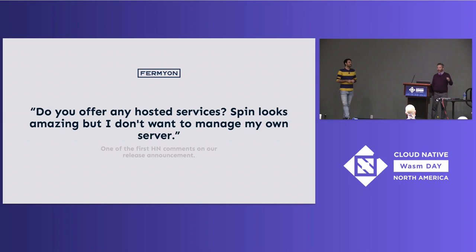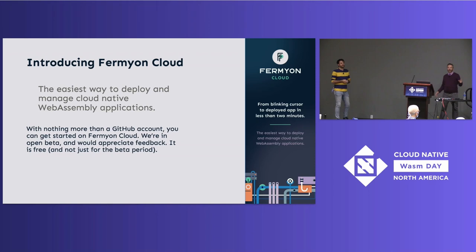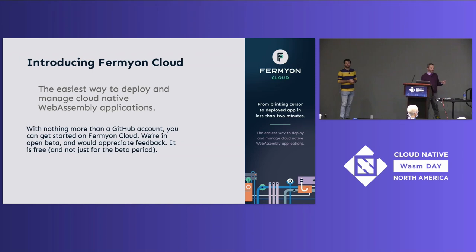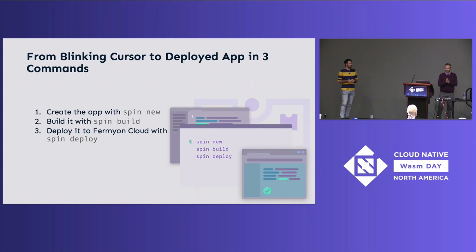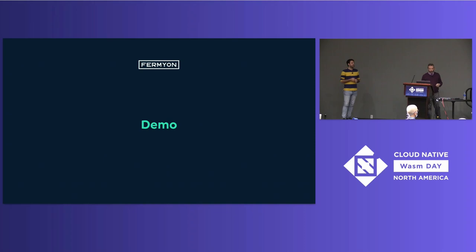Today we are happy to introduce Fermion Cloud, which is the next piece of this story. It is the easiest way to deploy and manage cloud-native WebAssembly applications. With just a GitHub account, you can get your Spin app configured to deploy to our cloud services and execute in the cloud — going from blinking cursor to deployed application in two minutes or less. Spin new creates your application, spin build builds it, and now spin deploy pushes it directly up into Fermion Cloud. I'll pass it over to Radu to walk us through an example.